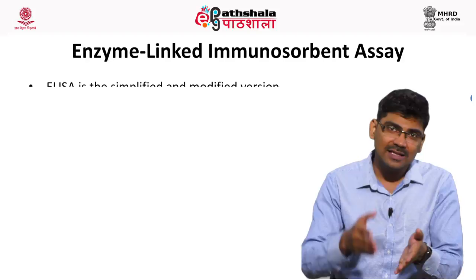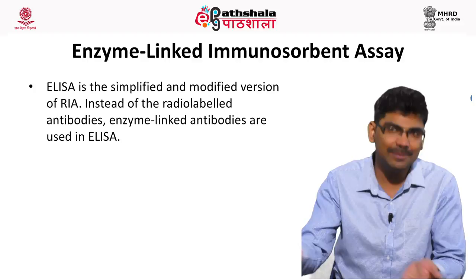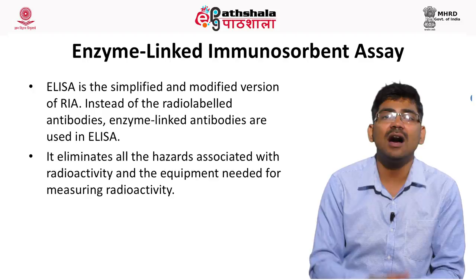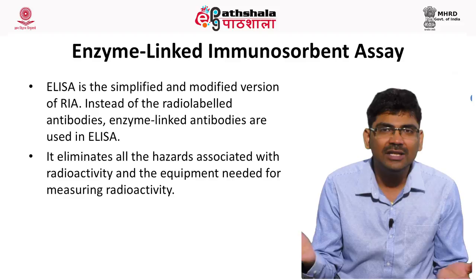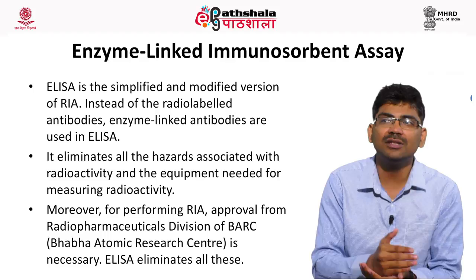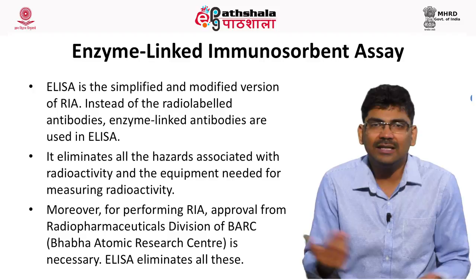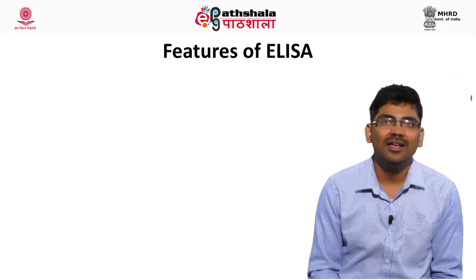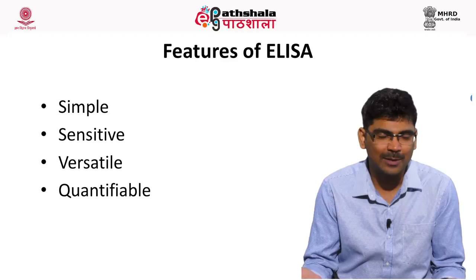ELISA is the simplified and modified version of RIA. The principle is similar, but the advantage is that it eliminates all the hazards associated with radioactivity. The equipment needed for measuring radioactivity is not needed in ELISA. Moreover, for performing radioimmunoassay you have to get permission from the Radiopharmaceutical Division of BARC, that is Baba Atomic Research Centre. In ELISA, there is no need for such permission. ELISA is simple, sensitive, versatile, and quantifiable.